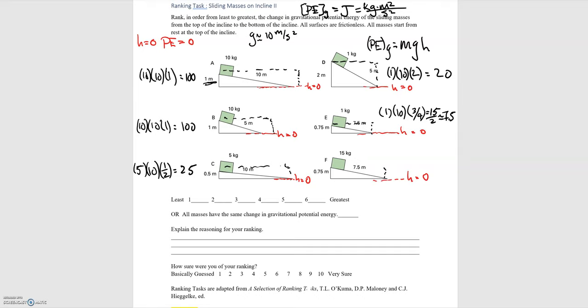And then for F, we have 15 kilograms times 10 meters per second squared times 0.75 meters, which is 3 quarters, and that comes out to 112.5.